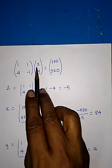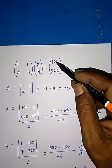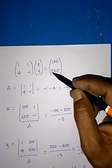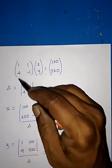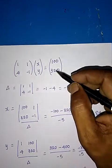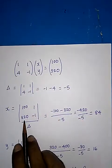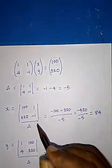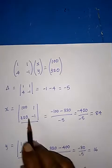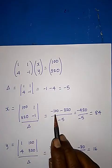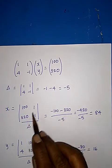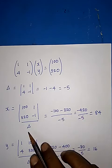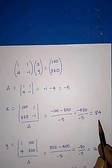To find X, replace the first column with the constants [100; 320], keeping the second column [1; −1] as is. The determinant of that matrix is 100 into −1 minus 320 into 1, which equals −100 − 320 = −420. Dividing by Δ = −5 gives X = 84.